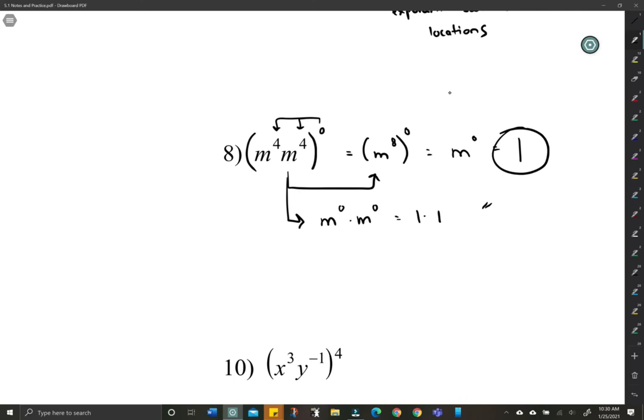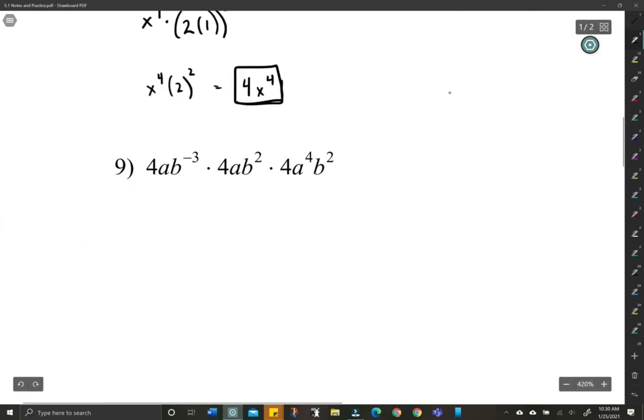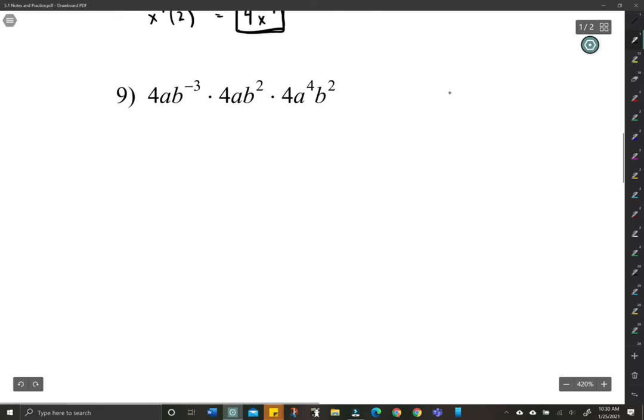Let's take a look at some others here. Here, we have a whole bunch of combination of stuff here. So let's take it step by step. Let's take it slow. First, let's multiply all the regular numbers. 4 times 4 times 4. That's 64.